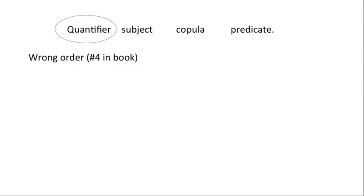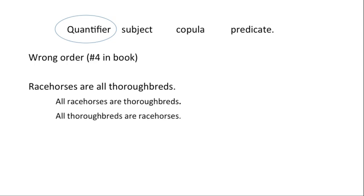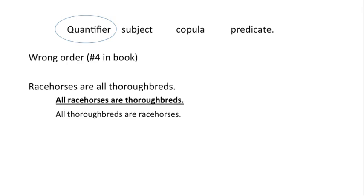Number four deals with the quantifier being in the wrong order. This is a little trickier because you have to think about the meaning of the statement — you can't just do it mechanically. Example: 'racehorses are all thoroughbreds.' The word 'all' is supposed to be at the front. The question you have to ask is: should it be 'all racehorses are thoroughbreds' or 'all thoroughbreds are racehorses'? Should the 'all' attach to racehorses or to thoroughbreds? When they say 'racehorses are all thoroughbreds,' they're saying every racehorse is a thoroughbred — the word 'all' has been moved toward the end of the sentence even though it's actually attaching to 'racehorses.' You just have to think about the meaning.